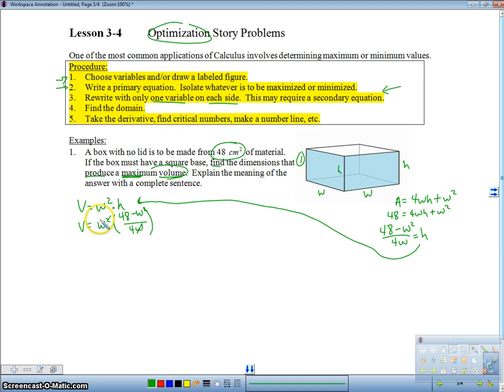V equals W squared times 48 minus W squared over 4W. W's cancel. I'm going to go ahead and distribute that. The volume equals 48 divided by 4 is 12. 12W minus 1/4 W cubed. So that's my primary equation written with one variable. This was my step two here. And this was my step three.